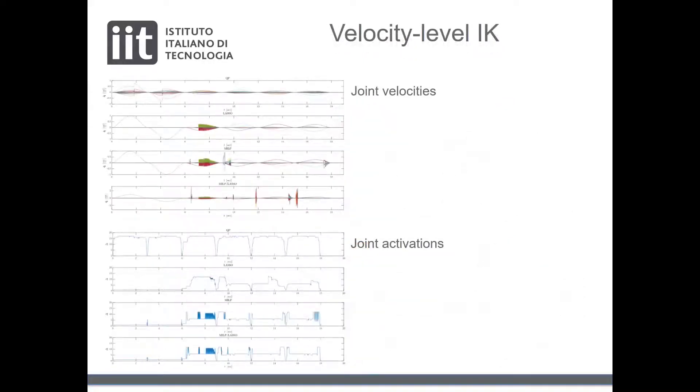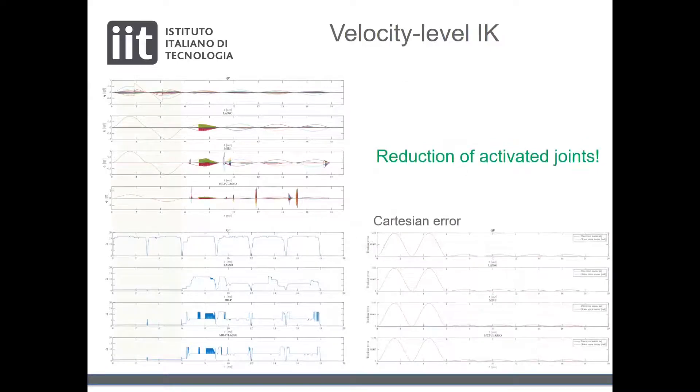These plots show the computed joint velocities on the top and the activated joints on the bottom. Indeed, we can see that the presented methodologies employ few degrees of freedom to achieve the tasks without changing the optimality of the highest priority tasks, as shown in the bottom right plot. Notice also that in the first part of the motion, under the green area, only one DOF is used.